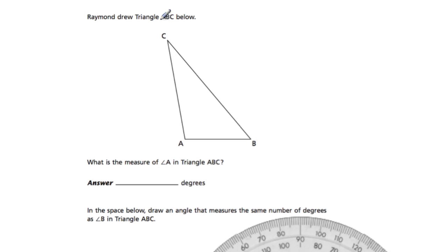In this question they tell us that Raymond drew triangle ABC below, and ABC just refers to the letters here: A, B, and C. That's our triangle.